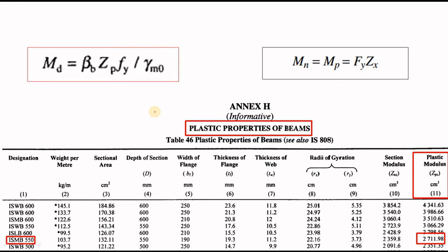When you design your steel structure using the limit state method for calculating the moment carrying capacity of the beam, you use plastic section modulus. For example, in the IS code you use this formula where ZP is the plastic section modulus, or in AISC 360 where you use this formula for finding the plastic moment capacity of the section, where ZX is the plastic section modulus. Normally you take the value of this plastic section modulus for different beam sections from the table given at the end of your code — for example, in IS 800 or IS MV 550.